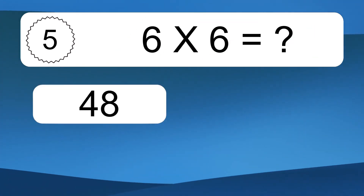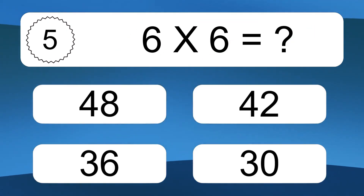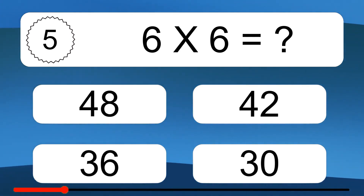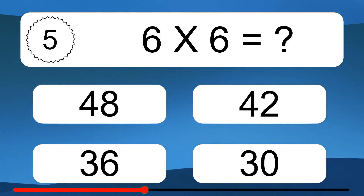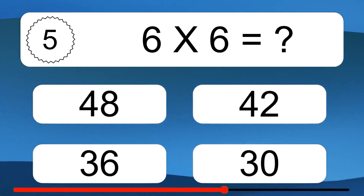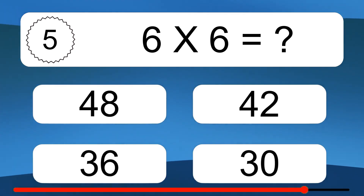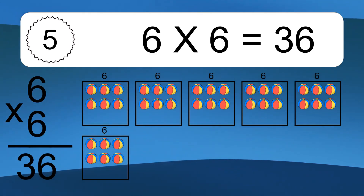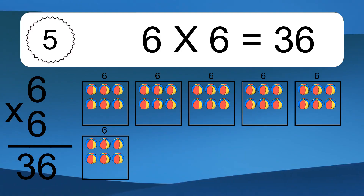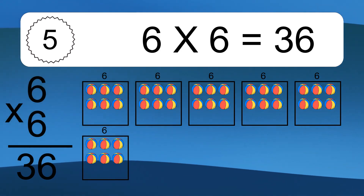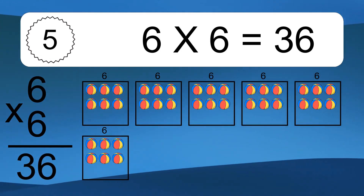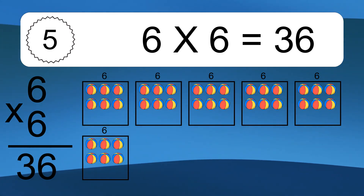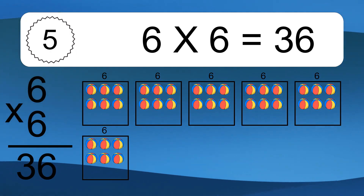6 times 6 equals what? 6 times 6 equals 36. We have 6 boxes, and each box has 6 colorful balls inside. If you count all the balls in all the boxes together, you will have 6 times 6 balls. This equals 36 balls.